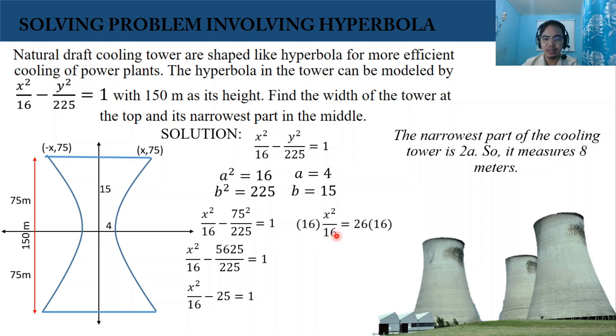16 is cancelled on the left side. Then on the right side, we have 26 times 16. That is 416. Then that is approximately 20.40 meters. That is the value of our x.